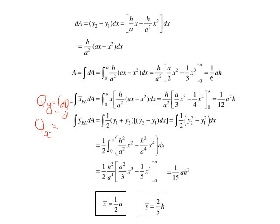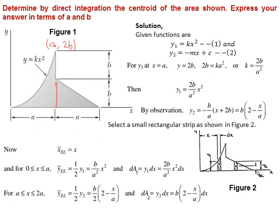Next we will look at a problem of a slightly different kind. In Figure 1, up to a distance a, the area is formed by the function y = kx². From a to 2a, the area is formed by a function of the form y = mx + c. In this case, we split the problem into two sections, do the calculations individually, and add them appropriately.